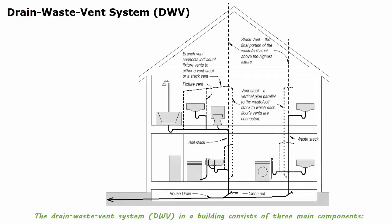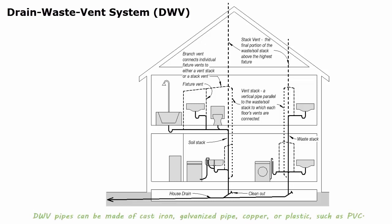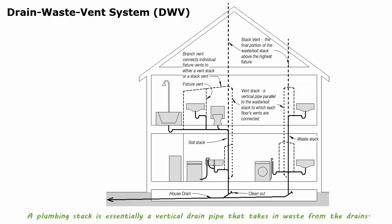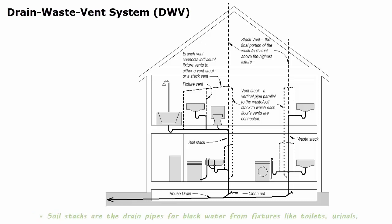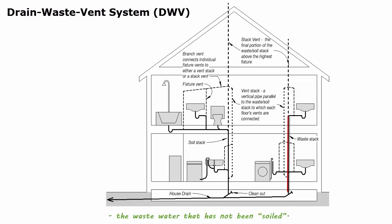The drain waste vent (DWV) system in a building consists of three major components: the drains collect wastewater from plumbing fixtures; the plumbing stacks carry wastewater down to the house drain; and the vent pipes remove sewer gases and allow air to enter the system. DWV pipes can be made of cast iron, galvanized pipe, copper, or plastic such as PVC. A plumbing stack is essentially a vertical drain pipe. Soil stacks are drain pipes for black water from fixtures like toilets, urinals, kitchen sinks, and dishwashers. Waste stacks are pipes that drain gray water from sinks, floor drains, water fountains, and wastewater that has not been soiled.